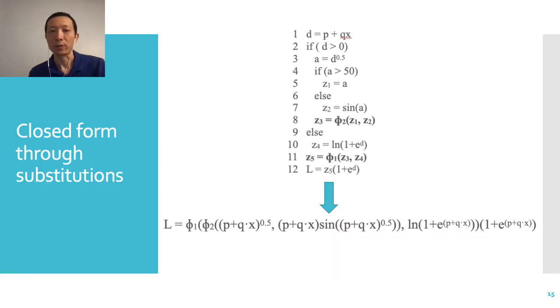An observation is that if a program is first represented in SSA, simple substitutions can already produce a closed form. In this example, for z5, if we substitute it with the phi function, and then substitute z3 and z4 by their corresponding expression, and so on. If we continue doing that, then we can get such a single line expression for computation of L.